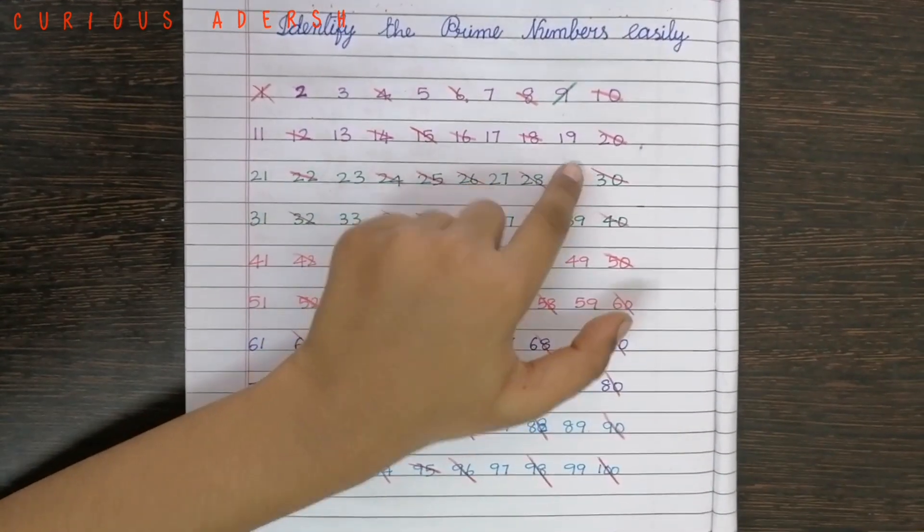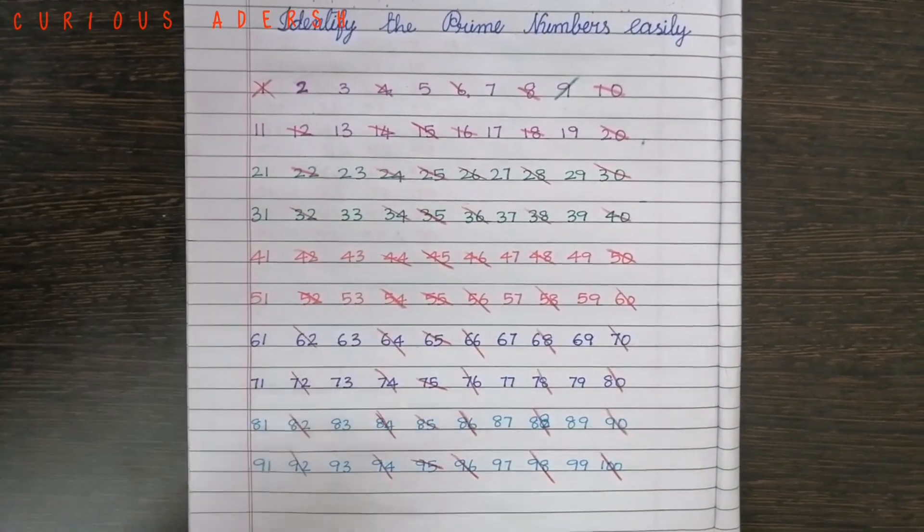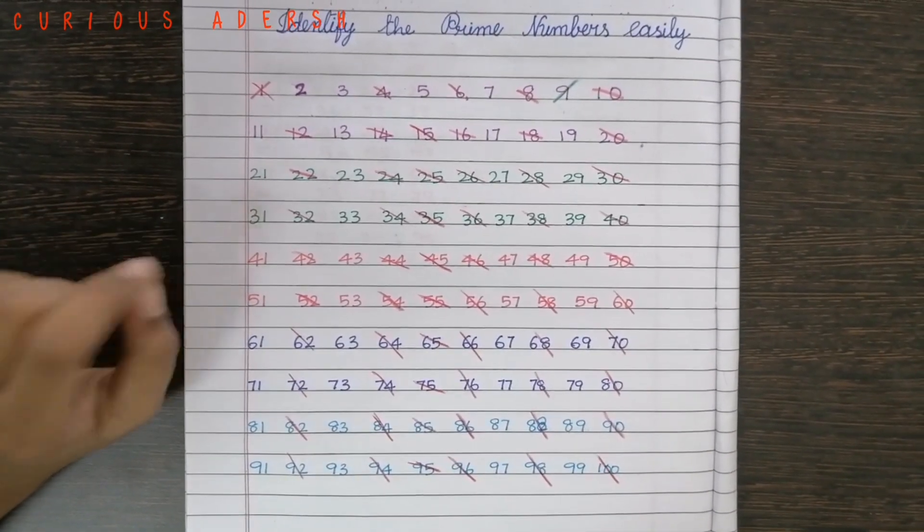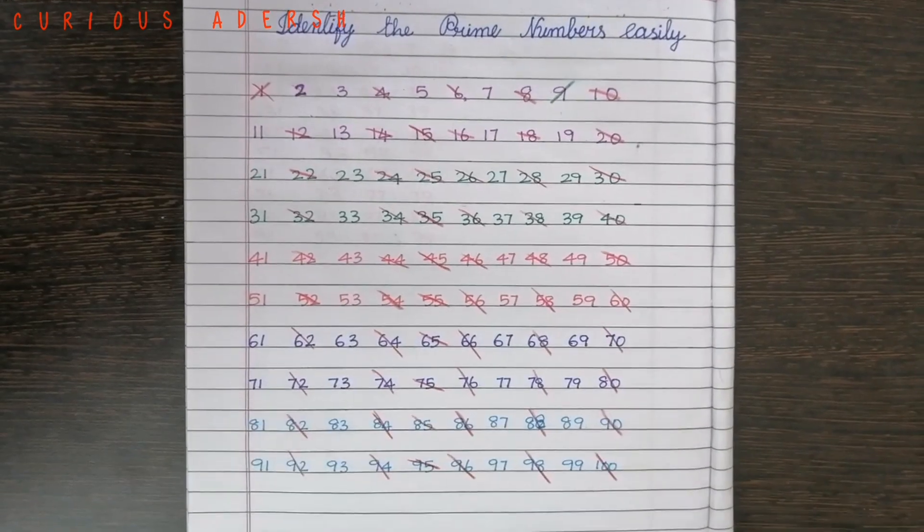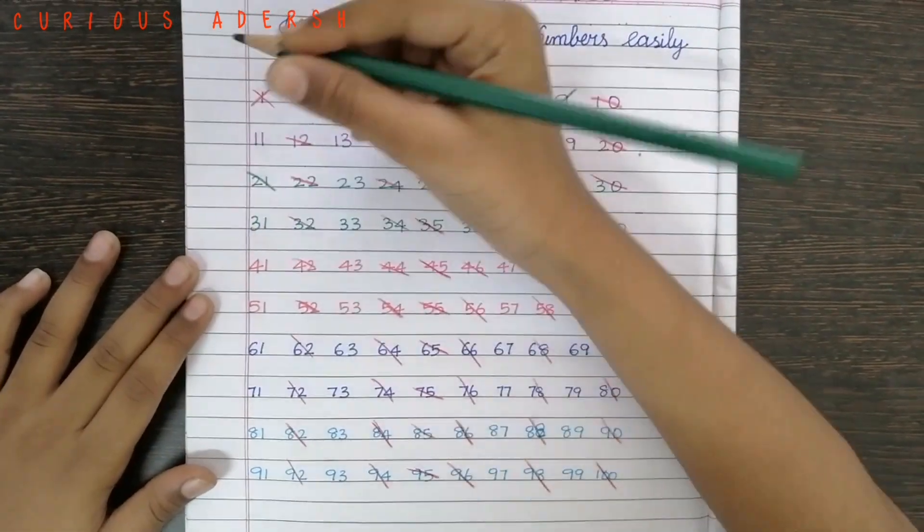13, 17, 19 are also not the multiples of 3. So we'll leave them. Let's move to 21. 2 plus 1 is 3. 3 is a multiple of 3. So we'll cancel 21.